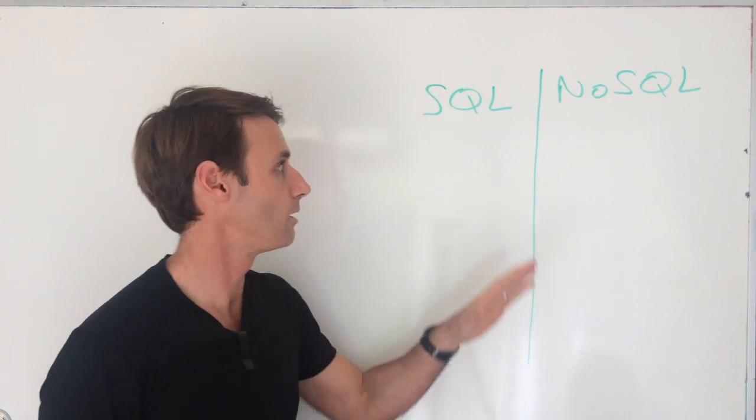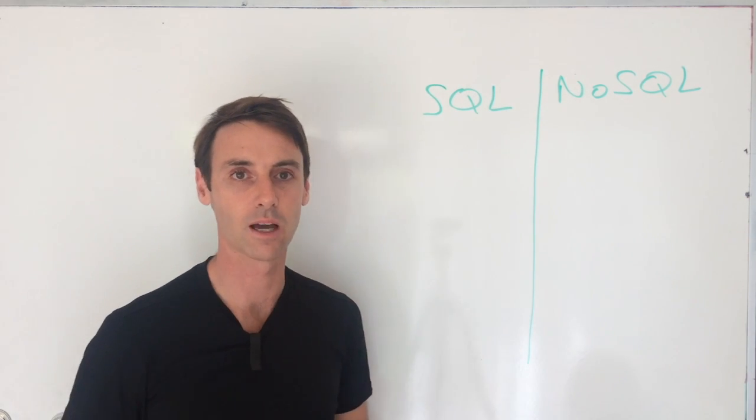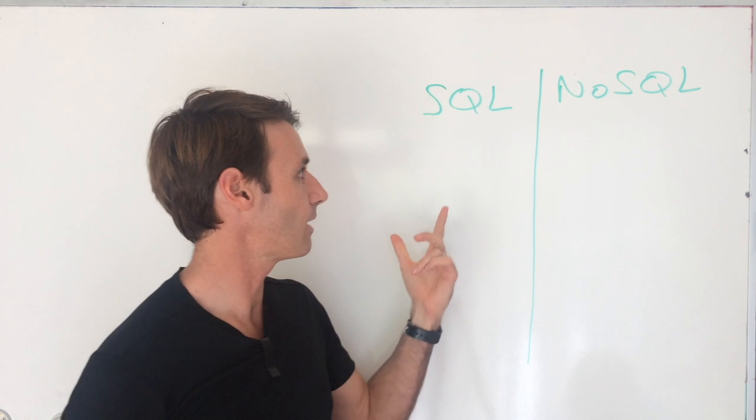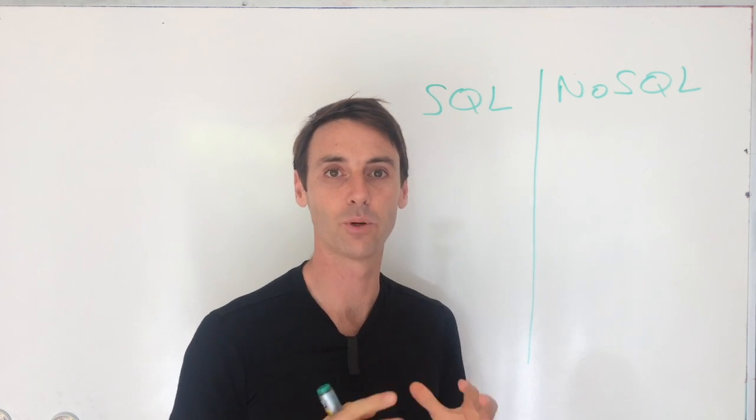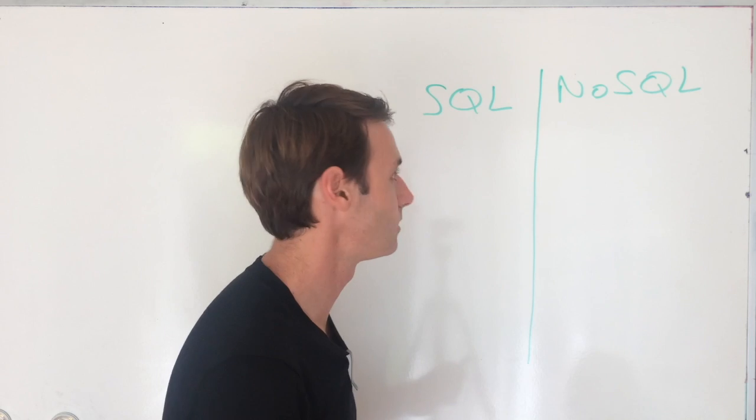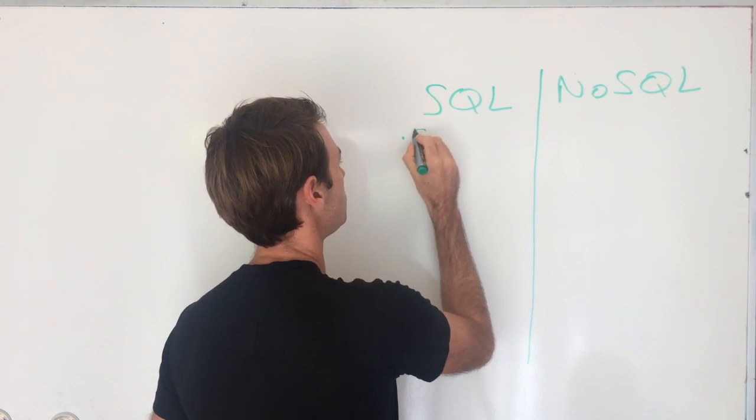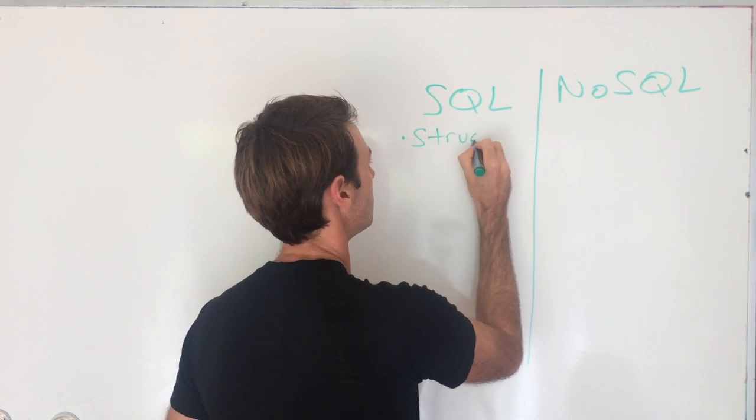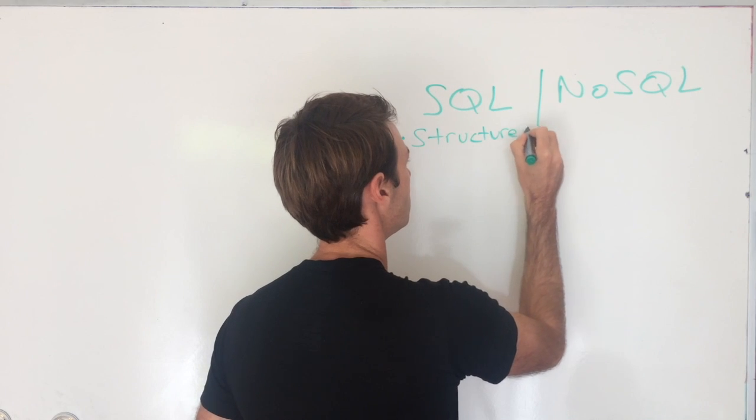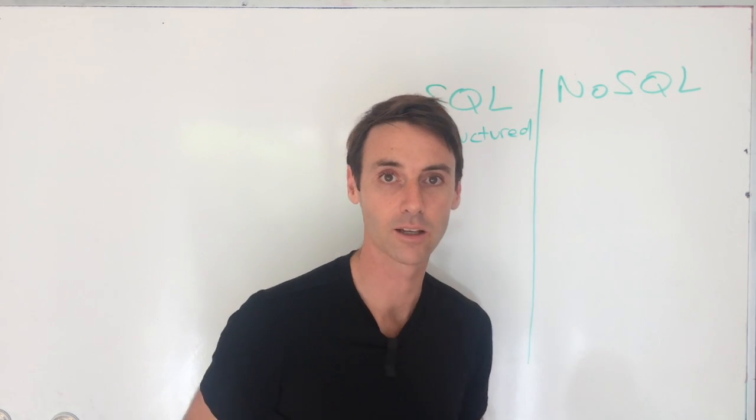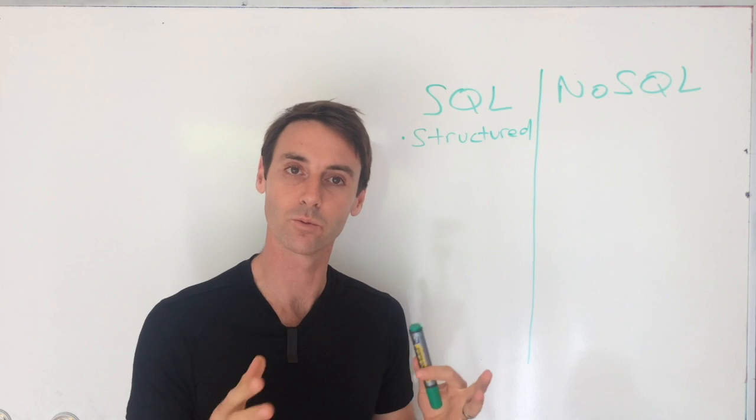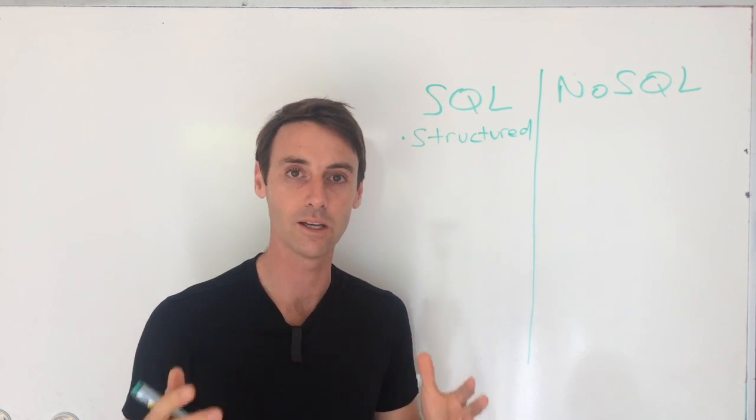If we look at an SQL database, we have to think about the data that's going to be put into that database as being structured data. That means you need to know ahead of time what that data is going to look like, and a schema for your tables within that database needs to exist.